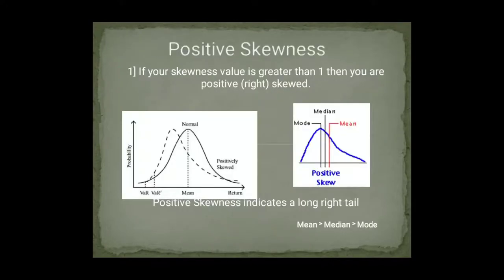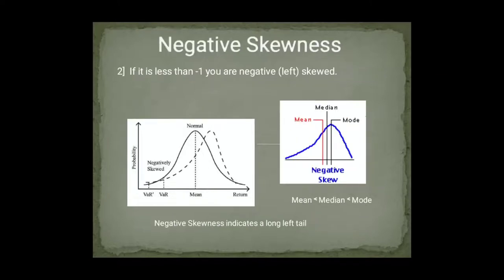If your skewness value is greater than 1 and you have positive skewness — if we are skewed to the right — positive skewness indicates a long right tail. If the tail is going on the right side, then it will be positive skewness. And if our value is minus 1, then we have negative skewness. And if the tail is going on the left side, then the left side will be greater as compared to the mean and median.